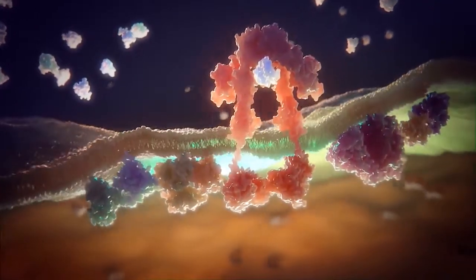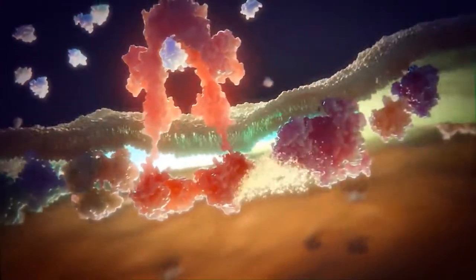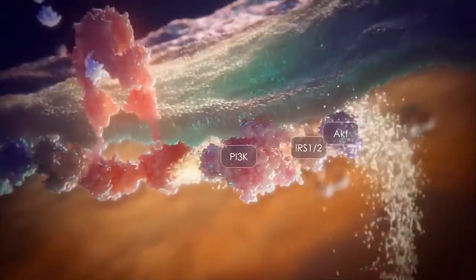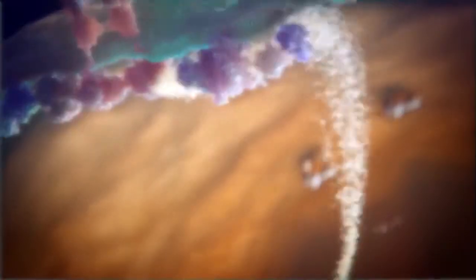Once active, IGF-1R can trigger the activation of the PI3 kinase-AKT signaling cascade, a pathway that has been implicated in cell survival and in the prevention of apoptosis or cell death.